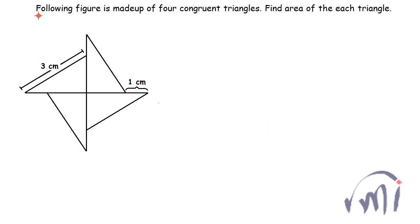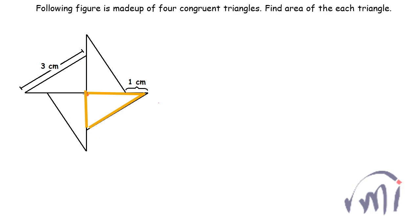Now let's solve the problem. The figure shown is made up of four congruent triangles — find the area of each triangle. We have a fan-like shape made up of one, two, three, and four right-angle triangles, all of which are congruent.